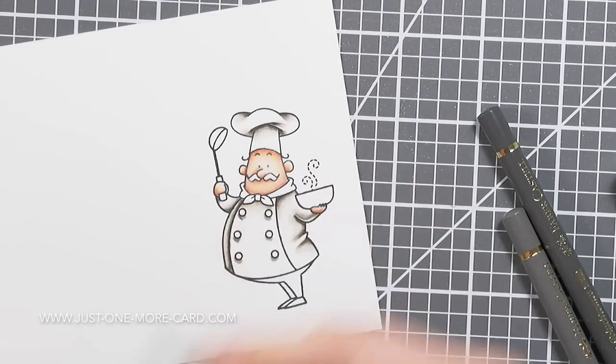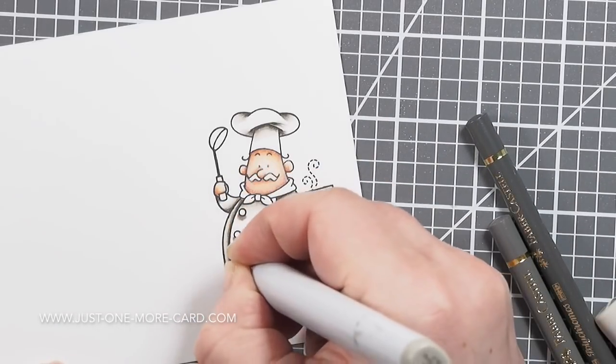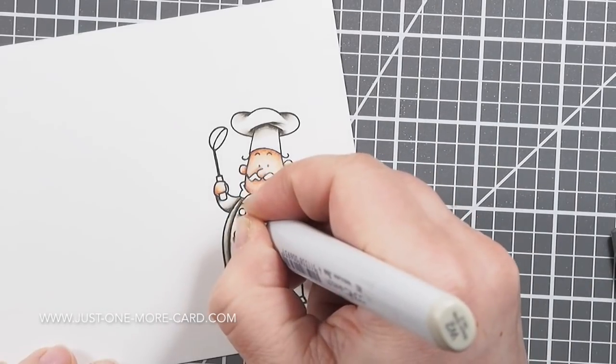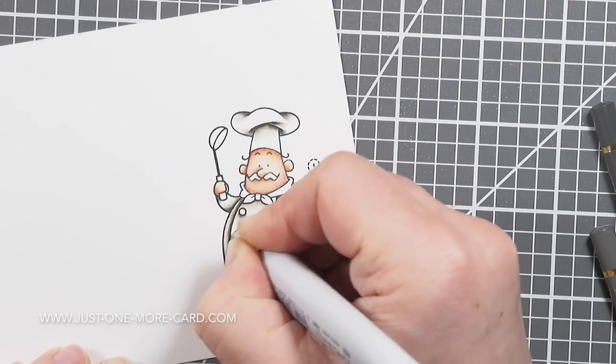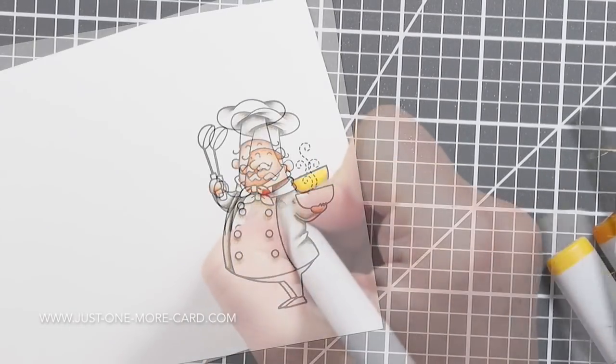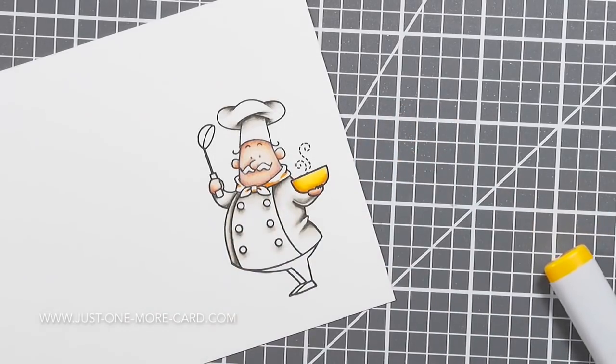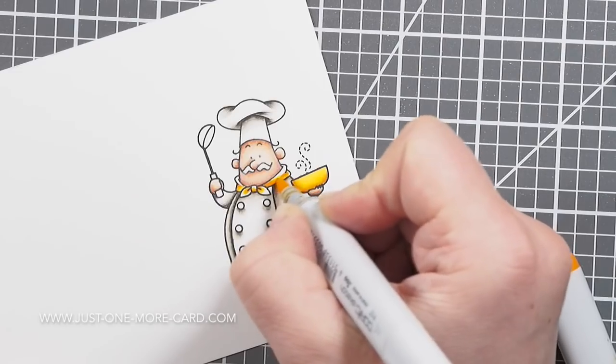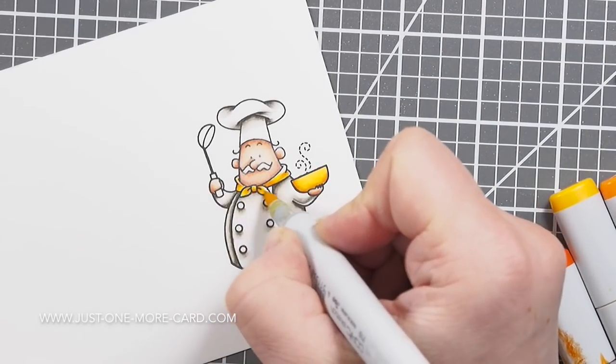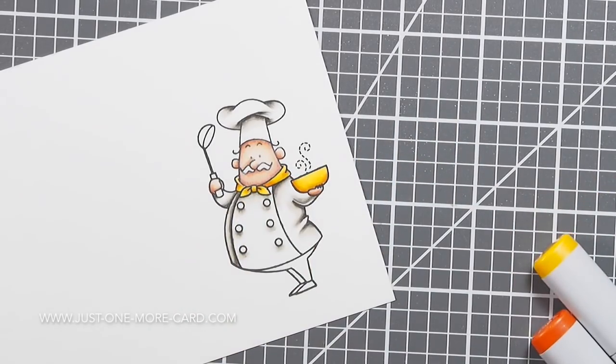I don't want my nib damaged by taking up the pigment of the pencils, so Copics first, and once you're done with the Copic coloring, then you put down the pencils. You can see I'm just working my way here through his clothes and the utensils.